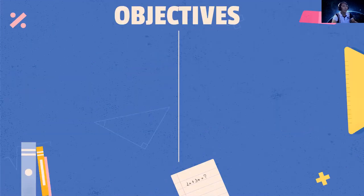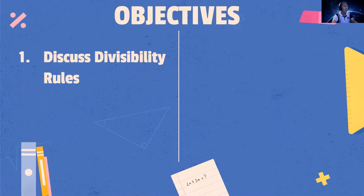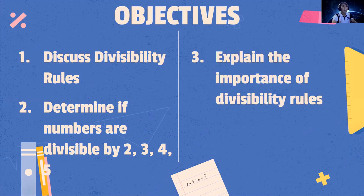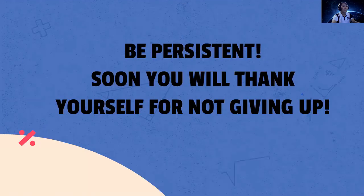What are the objectives of this lesson? Number 1, discuss divisibility rules. Number 2, determine if numbers are divisible by 2, 3, 4, and 5. Number 3, explain the importance of divisibility rules.